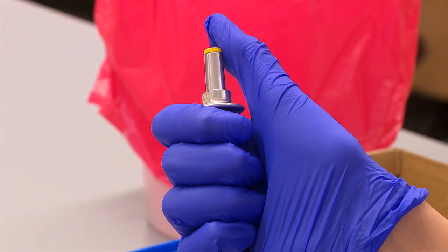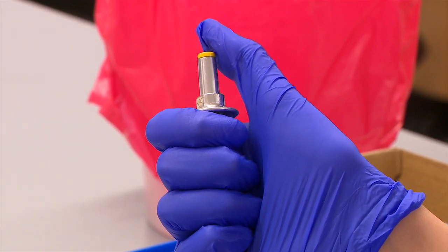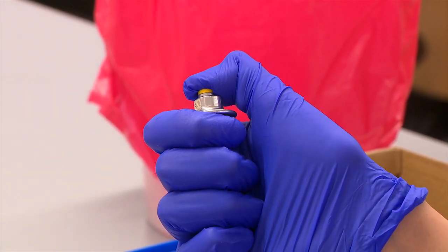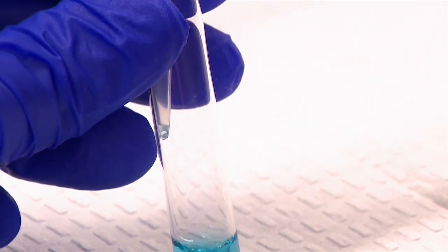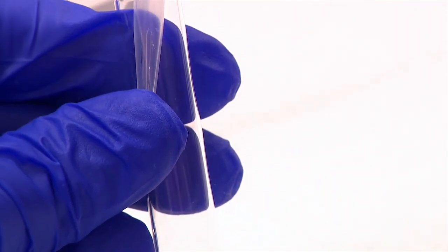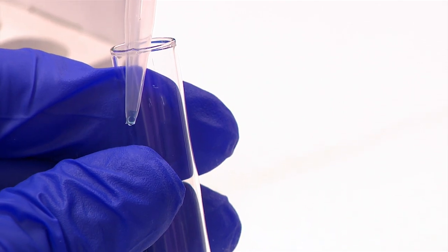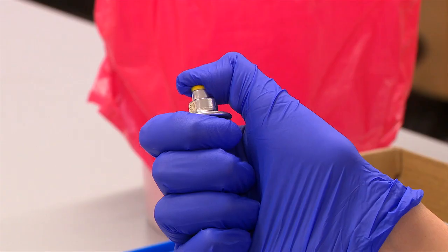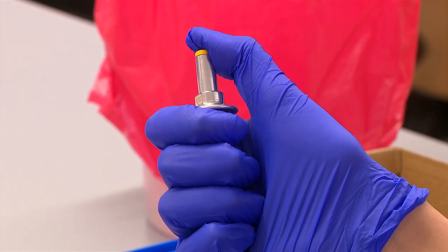Fully depress the plunger to the first stop and pause for one second. With the plunger still fully depressed, slowly withdraw the tip while sliding along the wall of the receiving vessel. Release the plunger to up position.